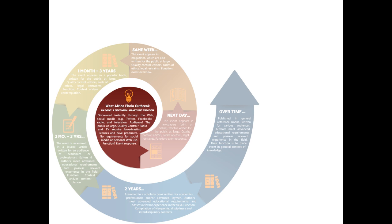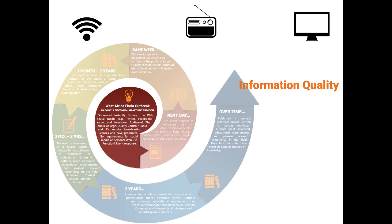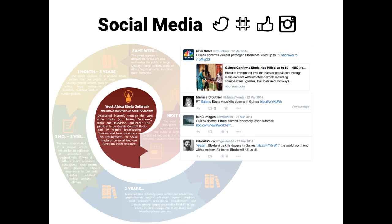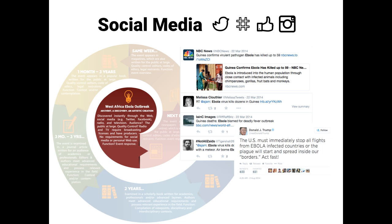Whenever something major occurs — let's say the West African Ebola outbreak — a conversation gets started. This conversation takes place instantly over the web, radio, and television. However, the information quality and quality control varies widely among them. Social media provides immediate responses to news events and allows people to communicate instantly. Since anyone can post, it can be personal and one-sided, which can create a breeding ground for speculation and misinformation.